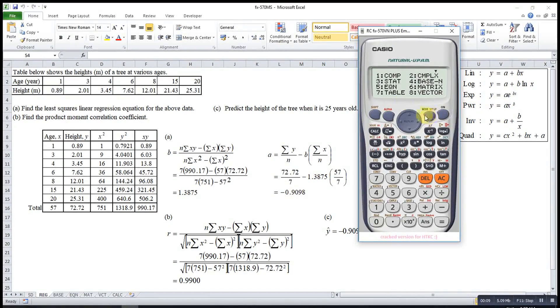First, we press mode. Then, we choose that. 3. Okay, after that, we choose A plus Bx. Since the question asks for linear regression, so 2.